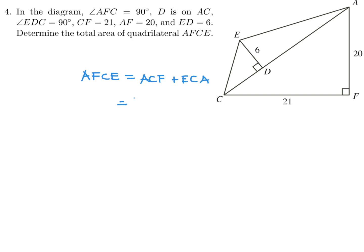Okay, so ACF, that's one half base times height, so that's one half times 21 times 20. And then ECA, again one half base times height. The base is going to be AC and the height will be 6, so all I need to do is figure out AC. Well AC I can get with Pythagoras. That's just AC squared is 20 squared plus 21 squared. And when you solve for that you get AC equal to 29. So then you take that 29 and sub it in. This is going to be 210, plus one half times 29 times 6. And when you crunch out all these numbers you'll get 297 as the total area.